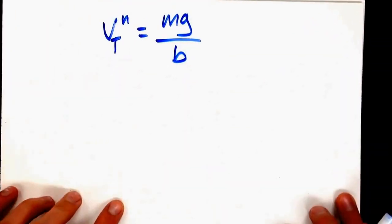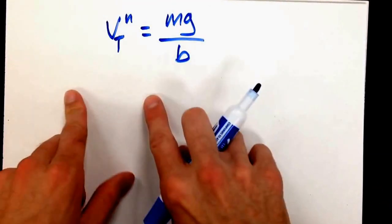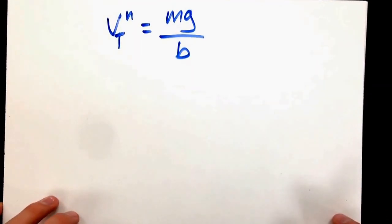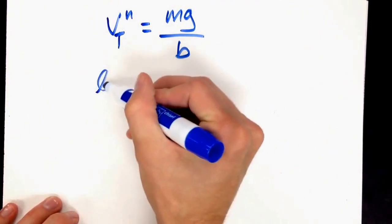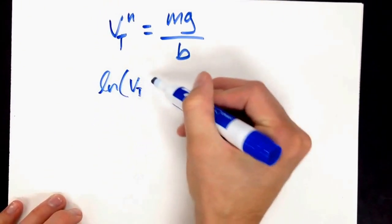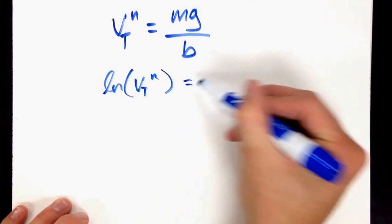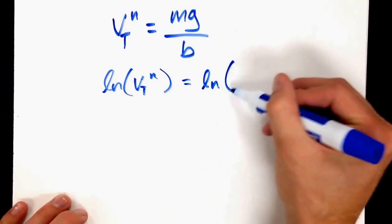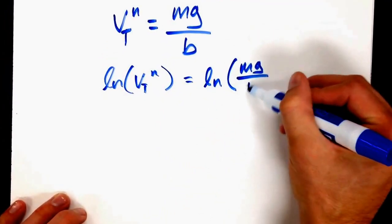I'm going to take the natural log of both sides. So I've got natural log of V_T to the n equals natural log of mg over b.